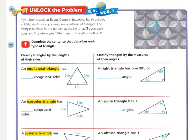Unlock the Problem. If you look closely at Epcot Center's Spaceship Earth Building in Orlando, Florida, you may see a pattern of triangles. The triangle outlined in the pattern has three congruent sides and three acute angles. What type of triangle is outlined?